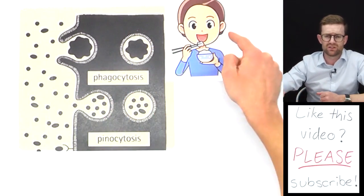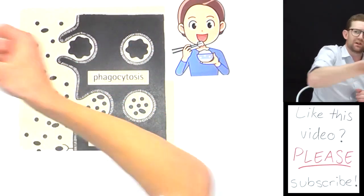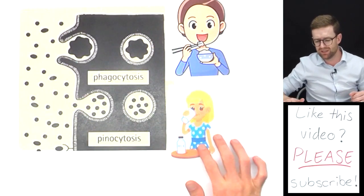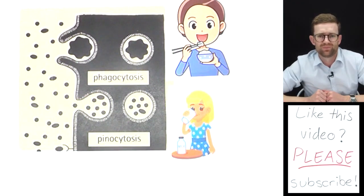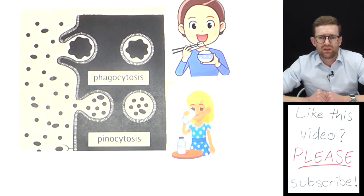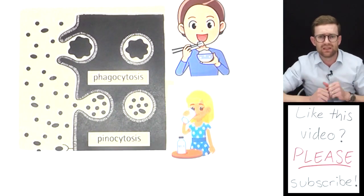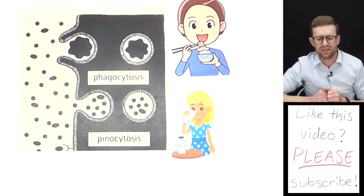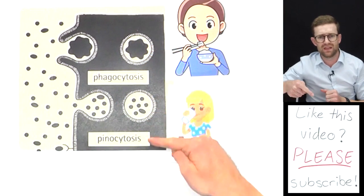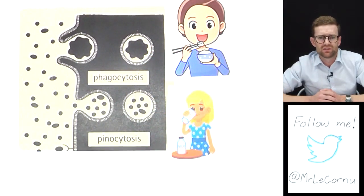Because pinocytosis is for smaller substances and often liquids, you probably guessed it: phagocytosis is cell eating, pinocytosis is referred to as cell drinking. So that's it—it's a summary of endocytosis. Generally the process occurs in the same way, but there are these two types: phago and pinocytosis. I hope this has helped you to understand them in more detail.